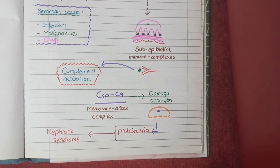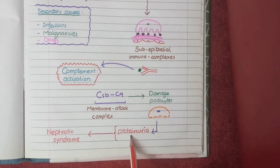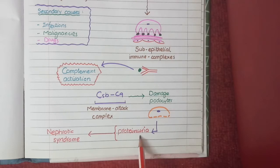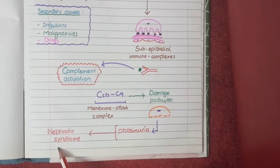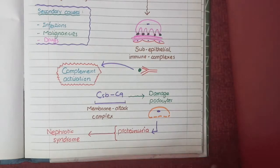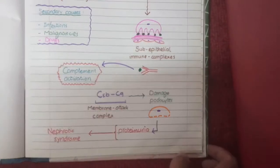The function of podocytes is to prevent the leakage of plasma proteins into the urine. Damage to podocytes results in leakage of plasma proteins into urine, known as proteinuria, and this proteinuria leads to nephrotic syndrome. This is the pathogenesis of the disease.